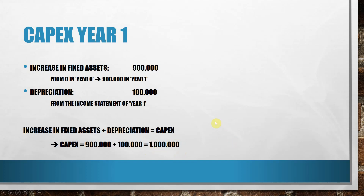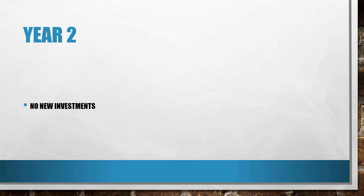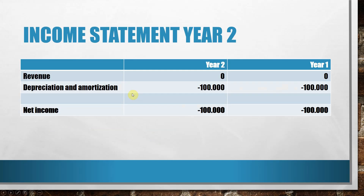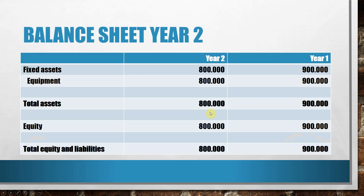In year two nothing happens: no new investments and the company is not selling equipment, so everything is very stable. We can also see that in the income statement: year two is exactly the same as year one. The only item is the depreciation of 100,000 euro, so also in year two we have a net loss of 100,000 euro.